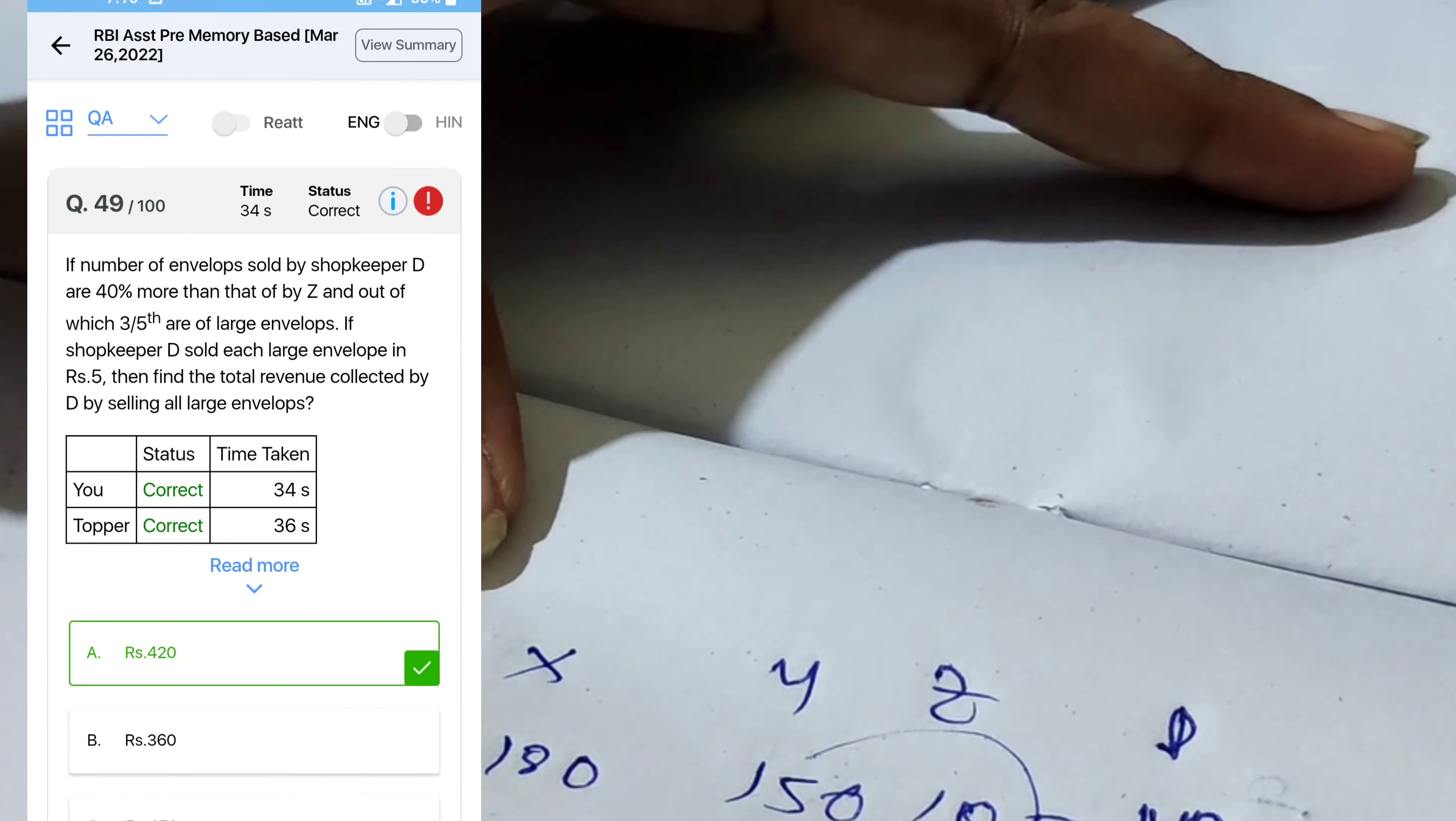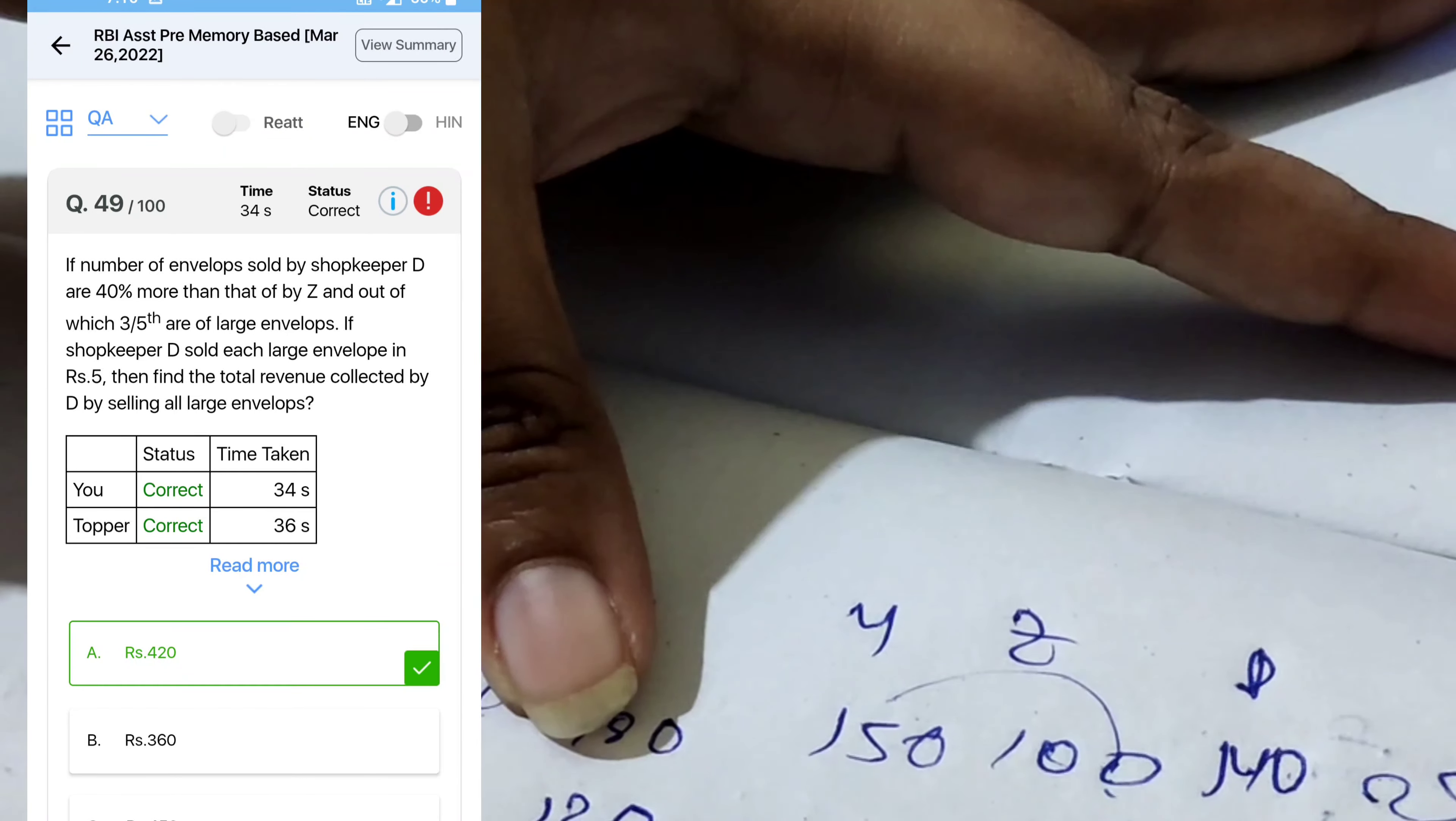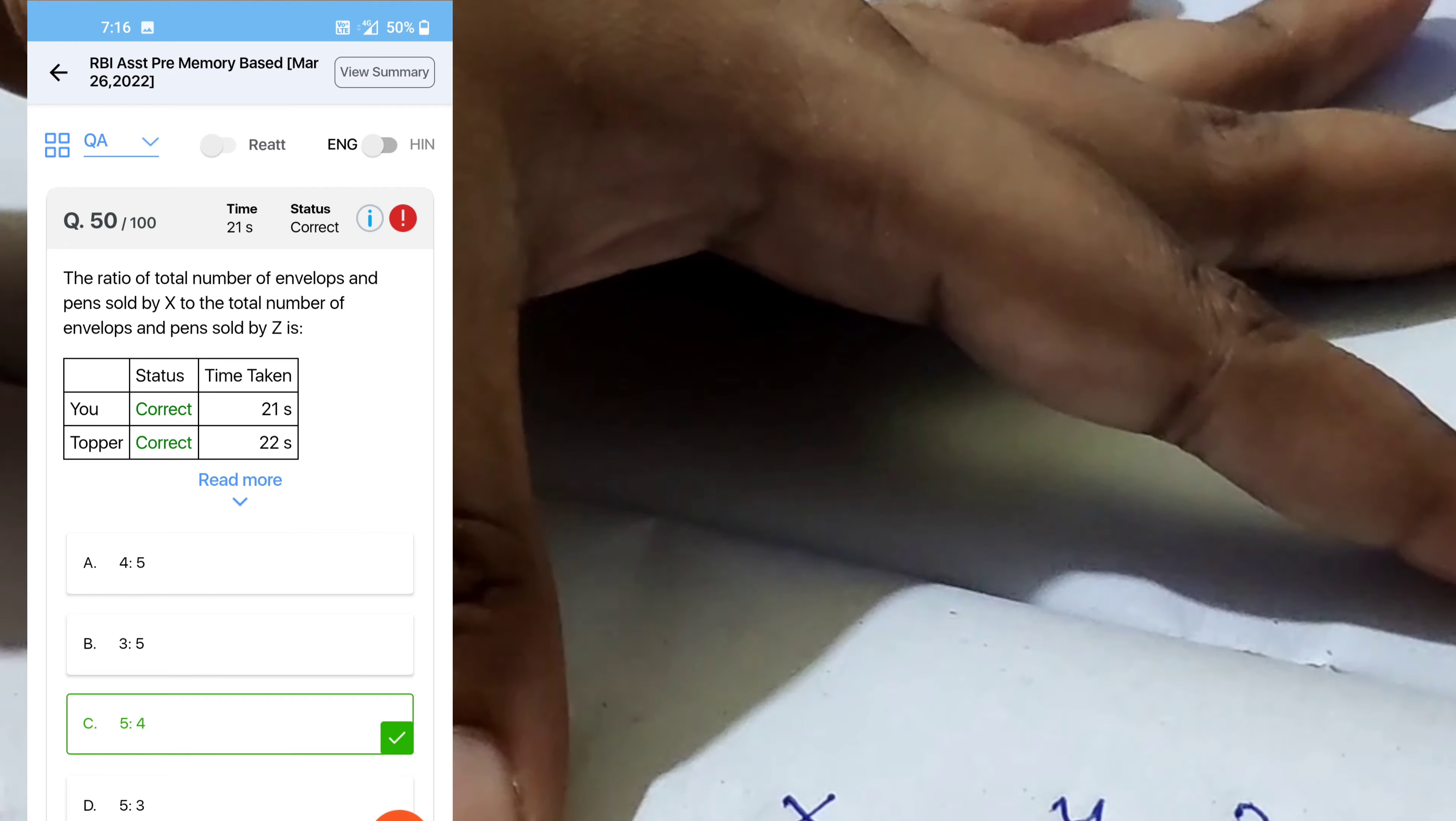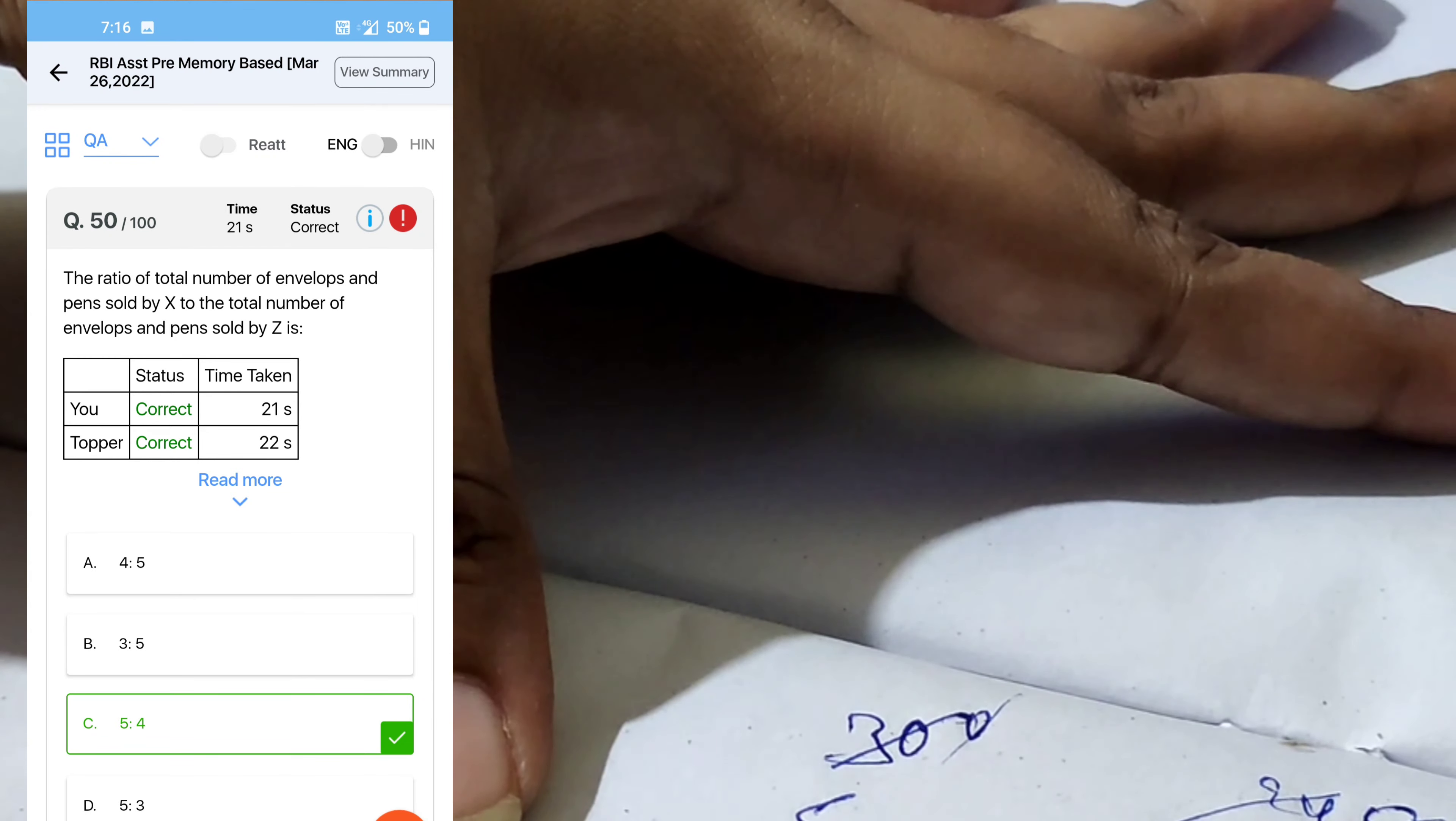Next, the total number of envelopes here, 40 percent more than Z, 140, out of which three-fifths are large. Three-fifths means 28 into 3, 84, five rupees. So 84 into 5, 420, option here. Next question, the ratio of total number of envelopes and pens to the X and Z. So 300 and that is 240, five is to four, option C.